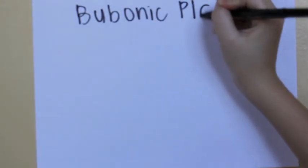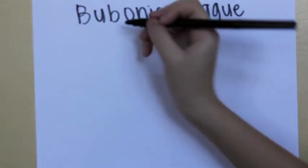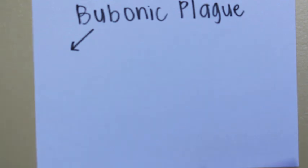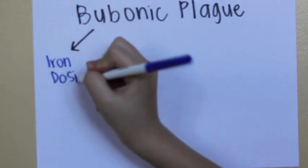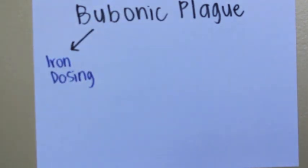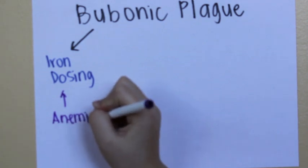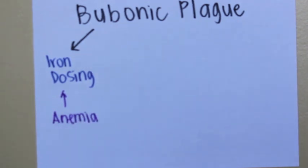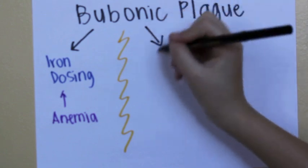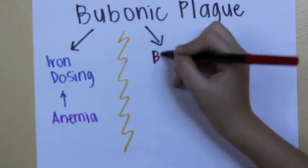From the effects of the bubonic plague came out two methods for the treatment of iron-related diseases. The first was iron dosing. Iron dosing is the act of putting more iron into a person's body through methods such as injections or iron-enhanced formulas. Iron dosing is primarily used to treat those suffering from an iron deficiency such as anemia.